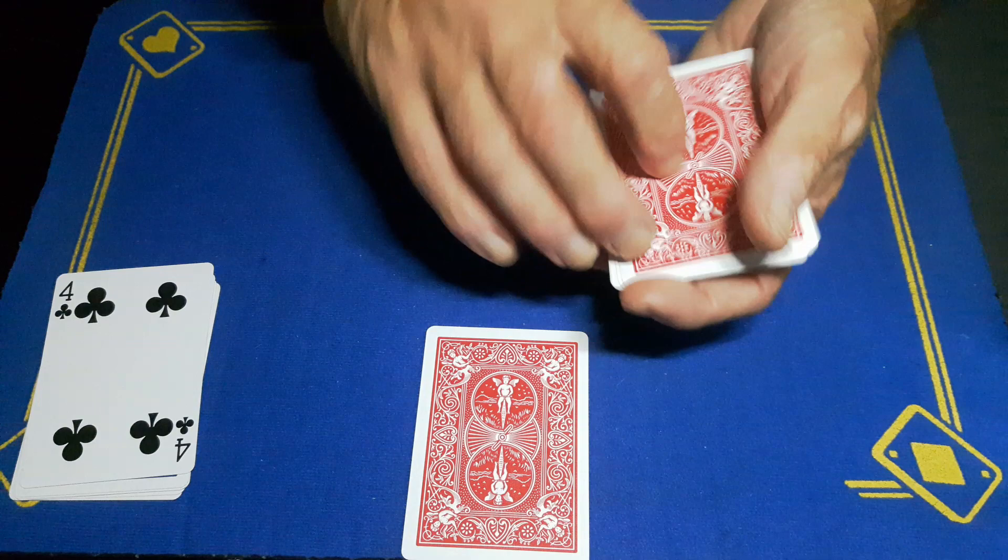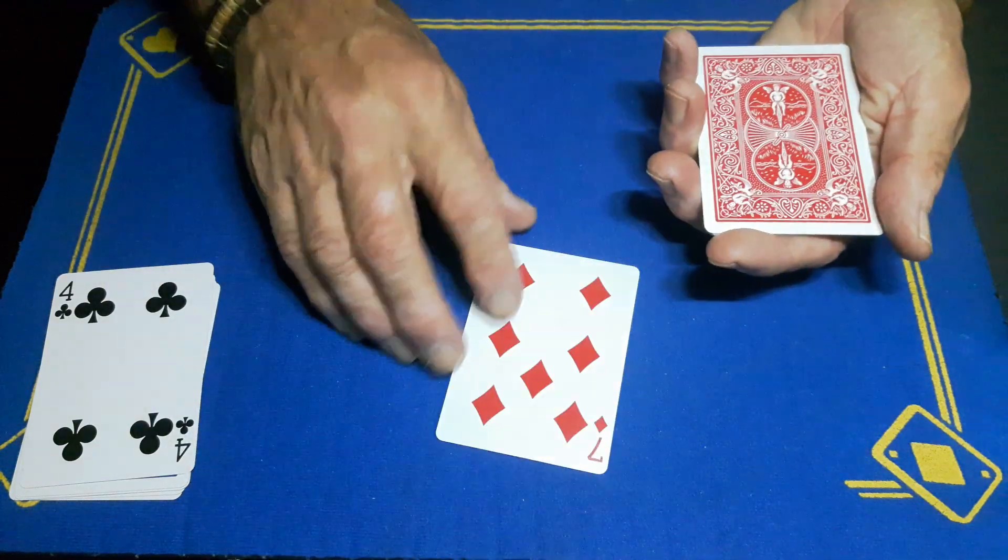So let's just get a random number: four. So if it's four, you know you've got to start from this side, so go one, two, three, four. That's your card.